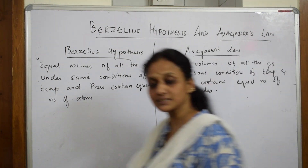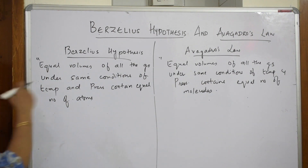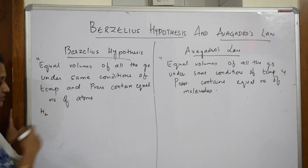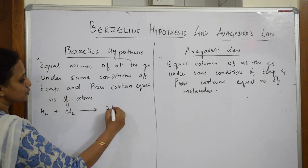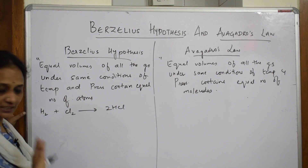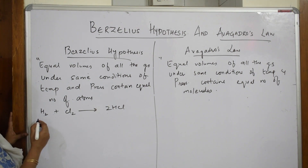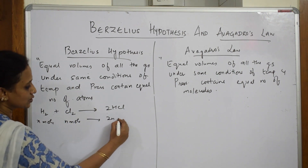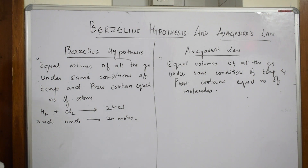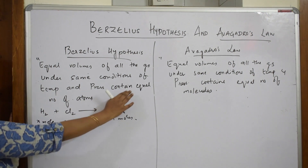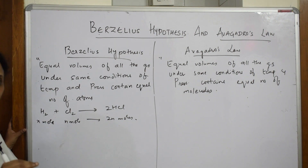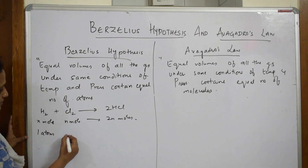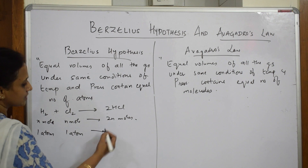Let's take an example to understand. Both speak about gaseous volumes. Take hydrogen in gaseous state combining with chlorine to form two HCl hydrochloric acid gas. Now, if I write n moles of H₂, n moles of Cl₂, this gives two n moles of HCl.